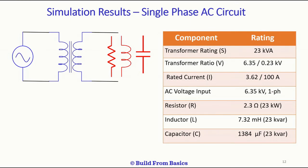The circuit elements are shown in the table. Let's take a single-phase 11 kV supply — this is the line voltage, and the phase voltage is 6.35 kV. We take a transformer rated at 23 kVA with a ratio of 6.35 kV on the primary and 230 volts on the secondary.